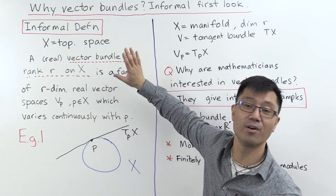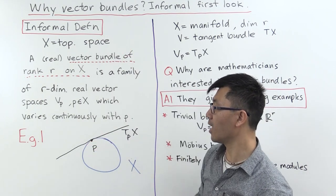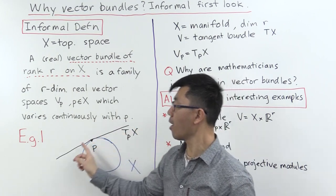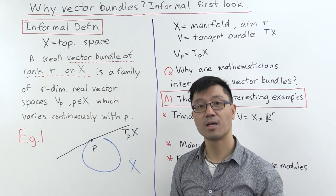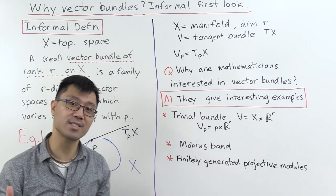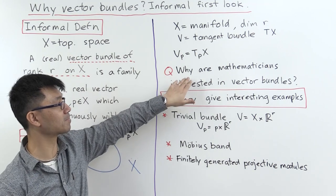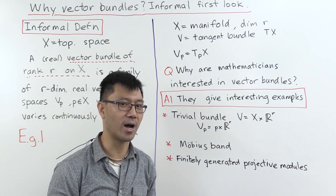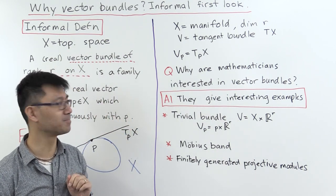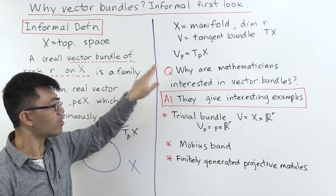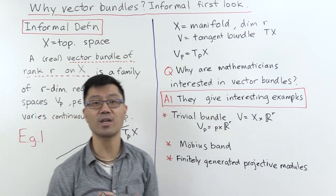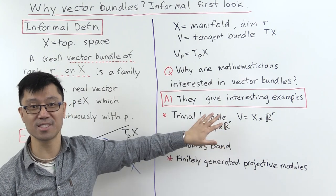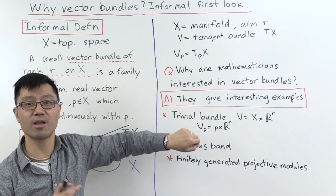That's how you should think of a real vector bundle. In this case it is one-dimensional, so this is a vector bundle of rank one. The first question I want to answer in this video is: why are mathematicians interested in vector bundles? And there are lots of good reasons. The first answer is that they give lots of interesting examples. The first one is called the trivial bundle. It is somewhat trivial, but it's going to be very important.